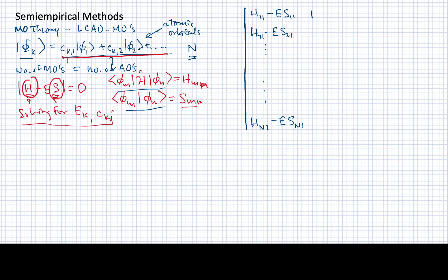In the next column over, I would have H12, and it turns out that HMN equals HNM because H is a Hermitian operator, one of the general properties we would have for Hermitian operators. So minus E S12, and here I'd have H22 minus E S22. This would continue down along the diagonal until I get to HNN minus E SNN in the lower right-hand corner.